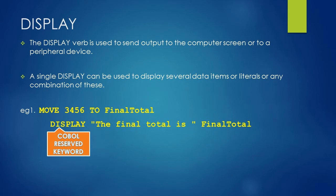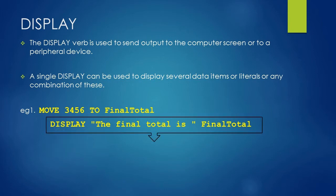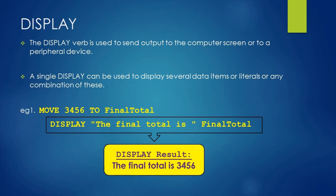We started with a COBOL keyword DISPLAY followed by a space. Then we have used a literal between the double inverted commas. The literal value is 'the final total is' with a space. And after a space, we have used our variable. The output of this DISPLAY statement is 'final total is 3456'.